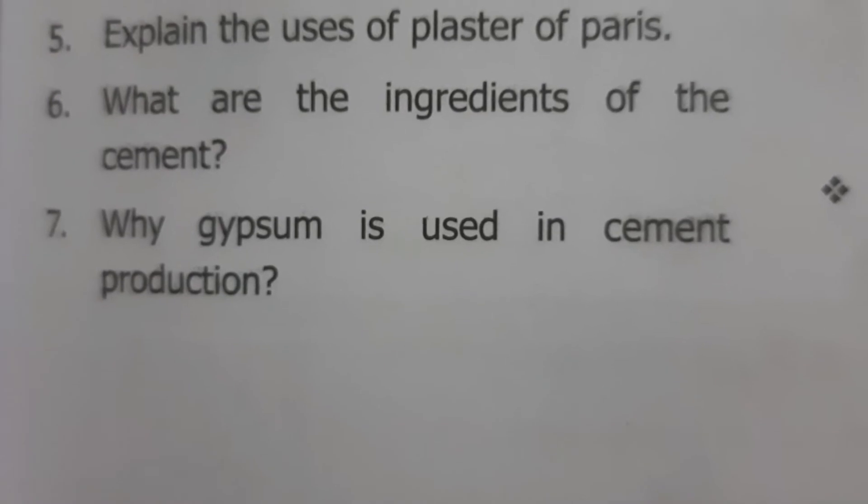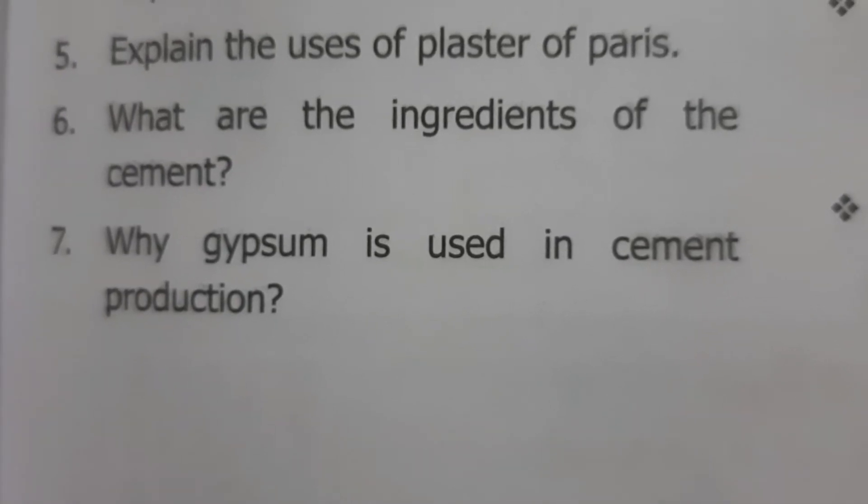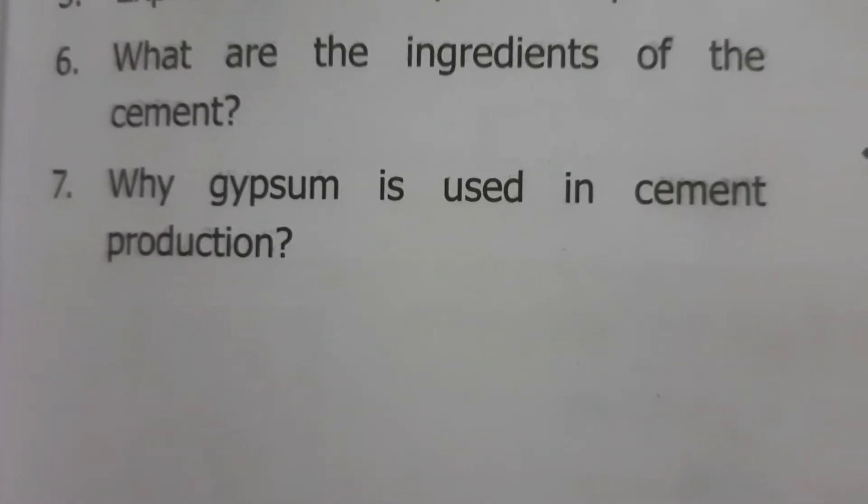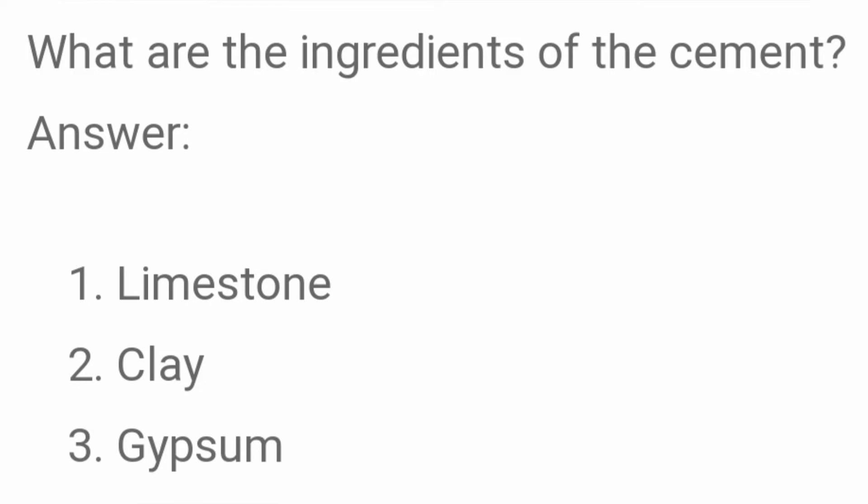What are the ingredients of cement? The ingredients are limestone, clay and gypsum. Gypsum is used for hardening.